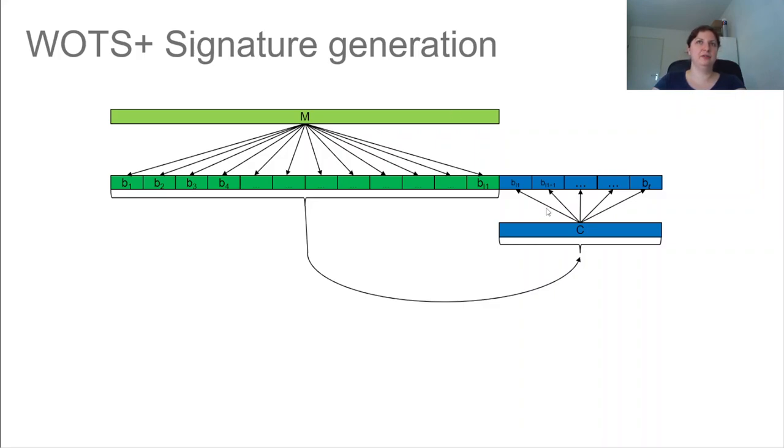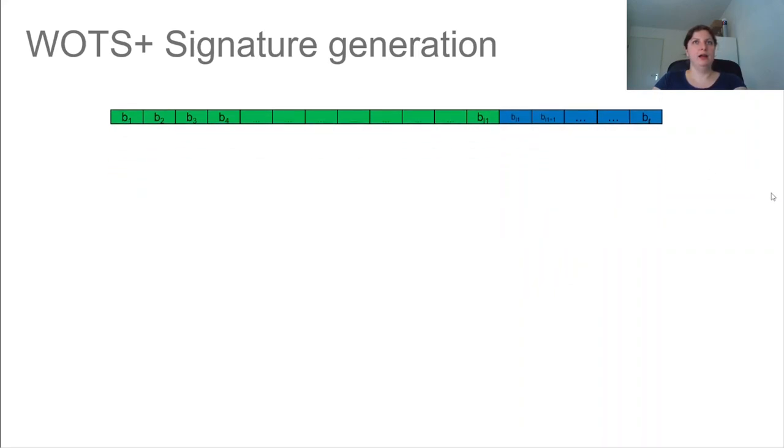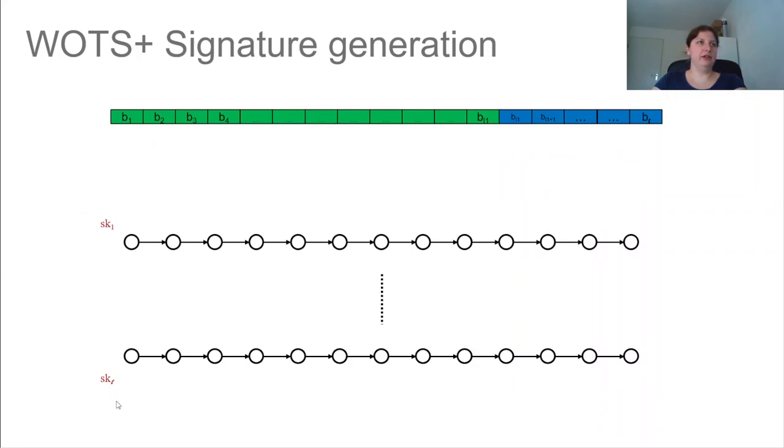And I'm simplifying a little because for Winternitz one-time signature actually it would chuck another few chunks behind that, namely the checksum. And the goal of this checksum is to prevent forgeries.